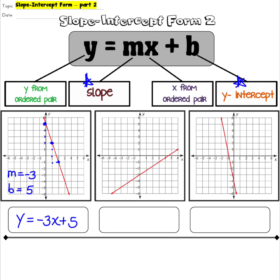On the next one, we have a y-intercept at negative three, so b is negative three. Looking for our slope, there's a point here and another point here, so we go up two over three — giving us a slope of two thirds. Writing that equation, y equals two thirds x minus three.